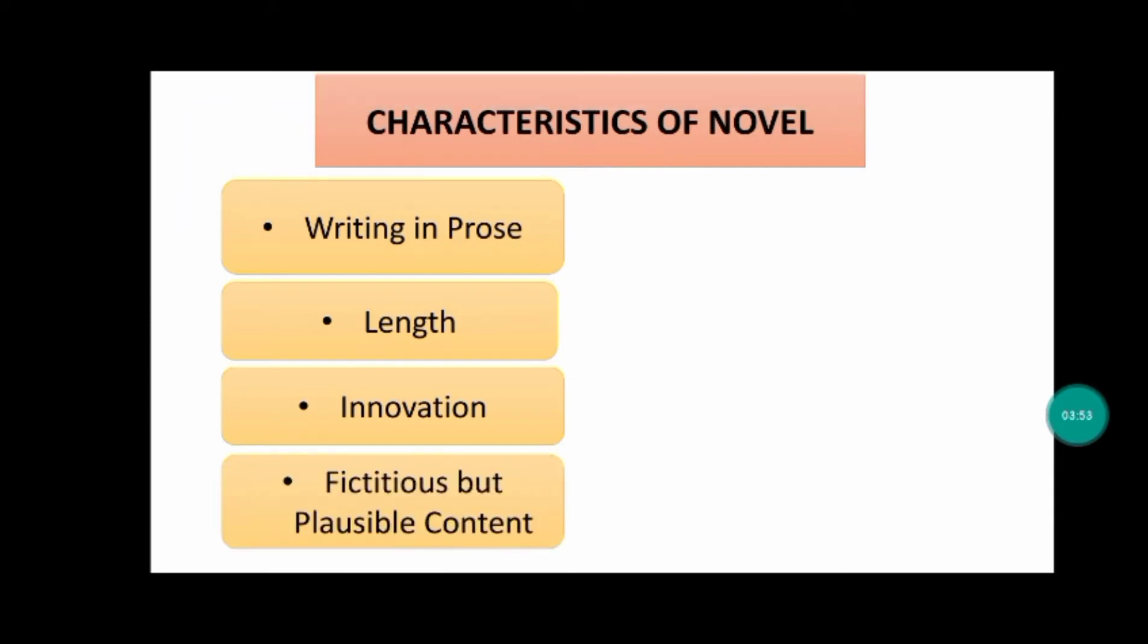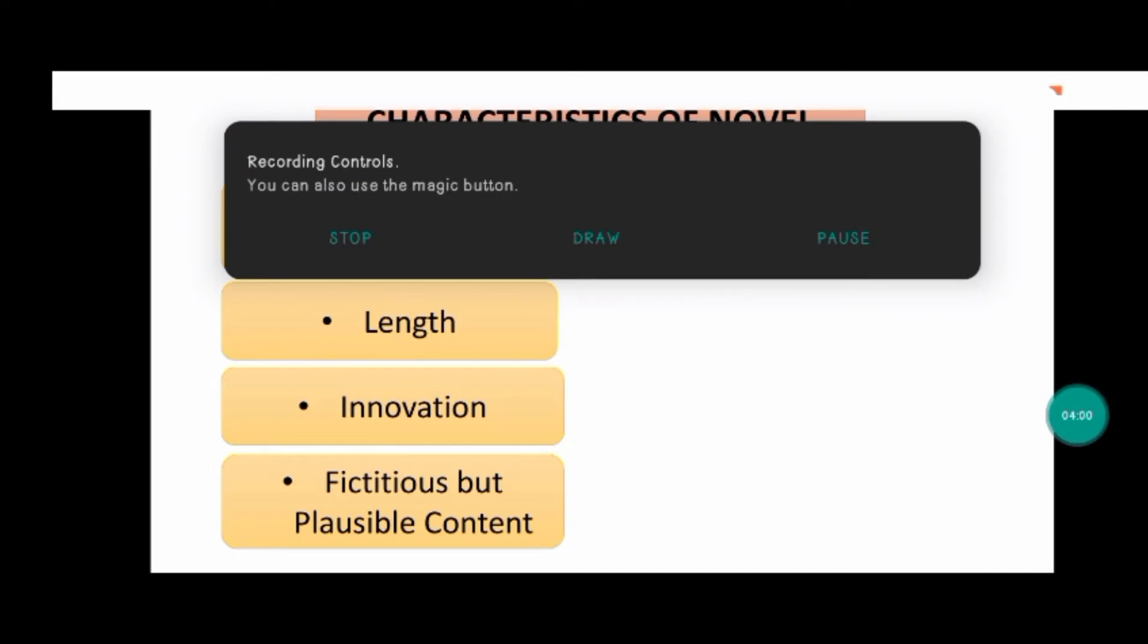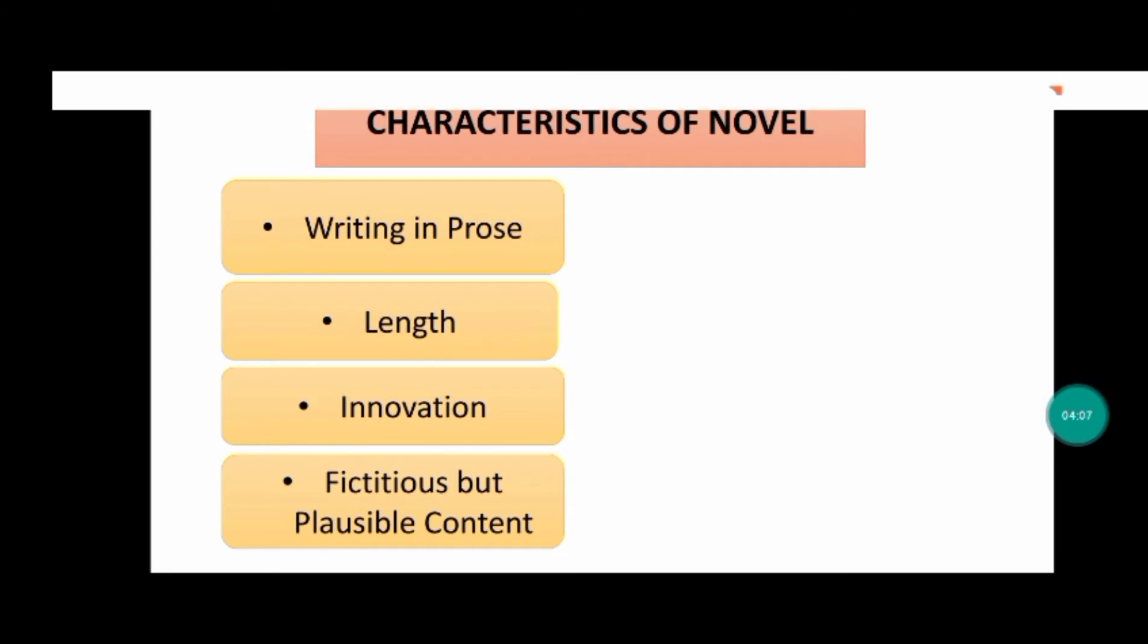Number four is fictitious but plausible content. Another fundamental feature of the novel are the themes it addresses. It is considered that these are pieces of fiction. However, the narrative is usually realistic and presents the facts plausibly and coherently. The realism is given by the characters, their relationships, and the coherence between the facts, even if they are fictitious.